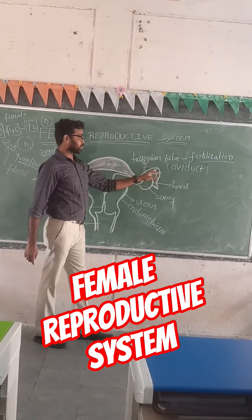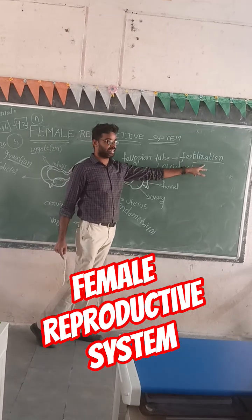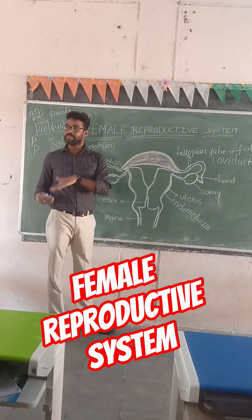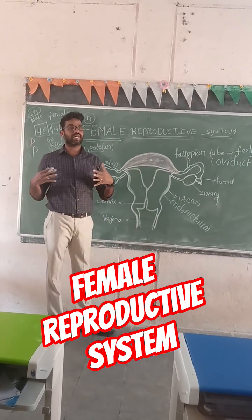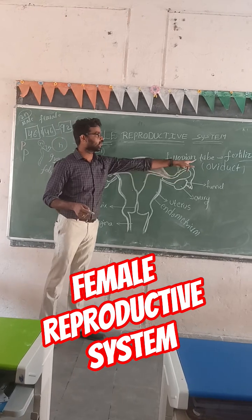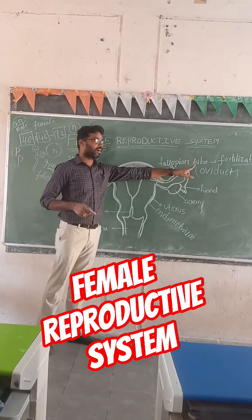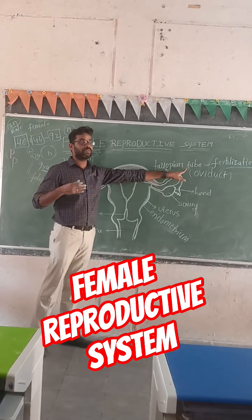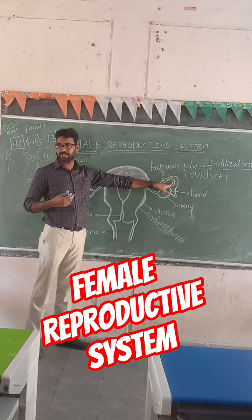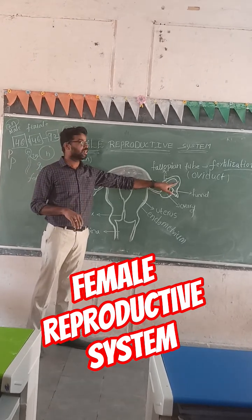Fertilization takes place in the fallopian tube. Male gametes and female gametes both combine together in the fallopian tube. Our new life starts in the fallopian tube, and the zygote will be formed in the fallopian tube.